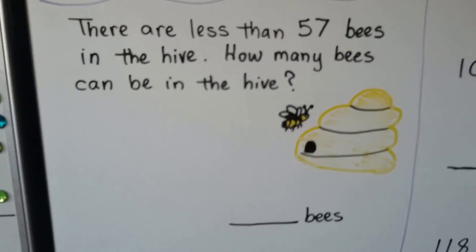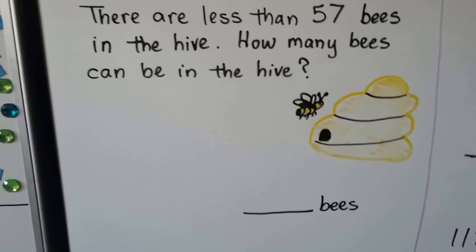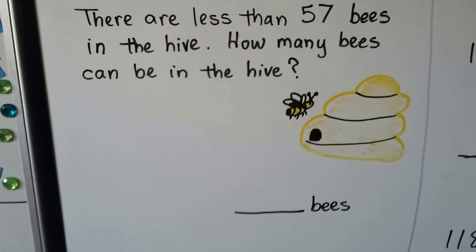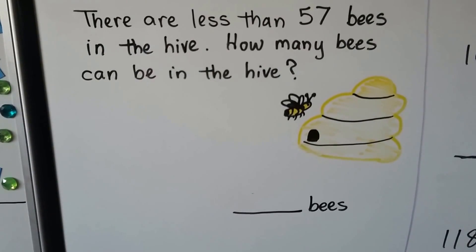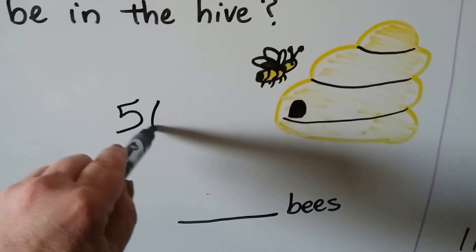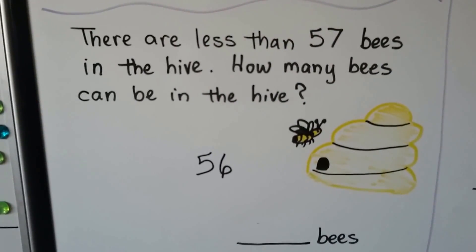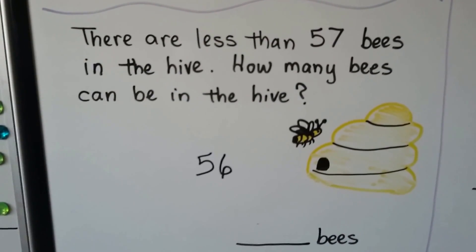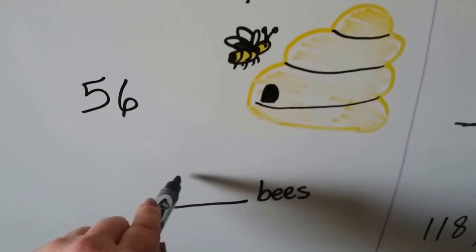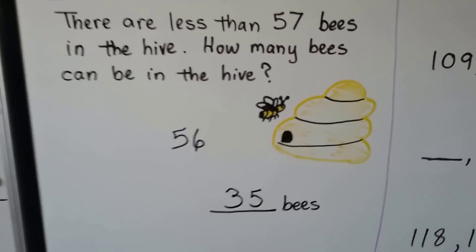There are less than fifty-seven bees in the hive. How many bees can be in the hive? Any number less than fifty-seven would make this true. The first would be fifty-six, then fifty-five, fifty-four, fifty-three, fifty-two, fifty-one, fifty, forty-nine — we could go all the way down. We could even say thirty-five or twelve, because all those numbers are less than fifty-seven.